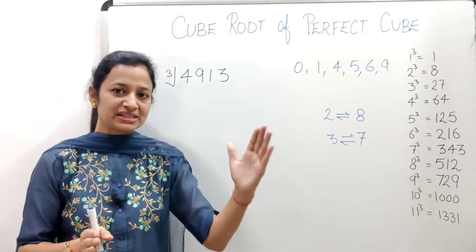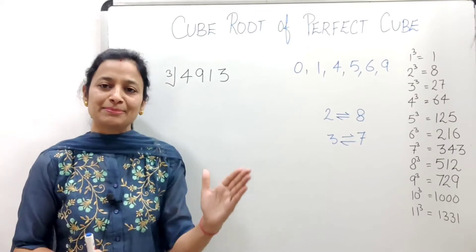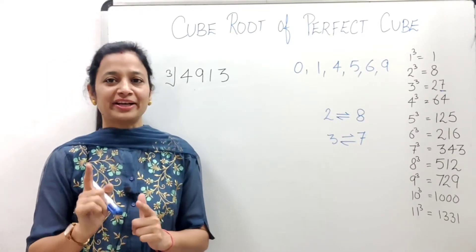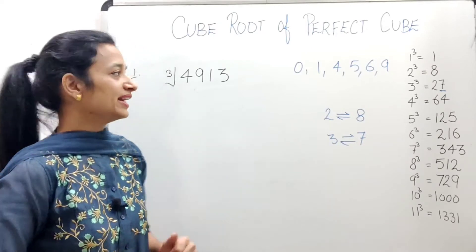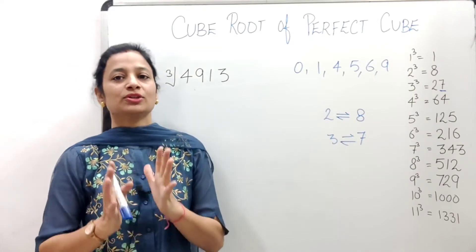8 cubed gives unit place 2. Look, 8 cubed is 512, so unit place is 2. And 7 cubed gives unit place 3. So 2 cubed has unit place 8, 8 cubed has unit place 2, 3 cubed has unit place 7, and 7 cubed has unit place 3. So now let's start the trick. Let's take the first example.